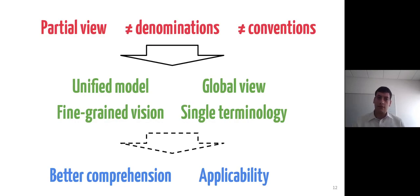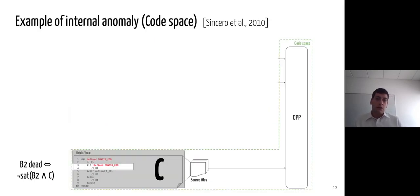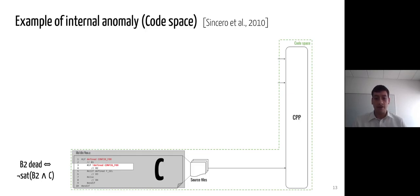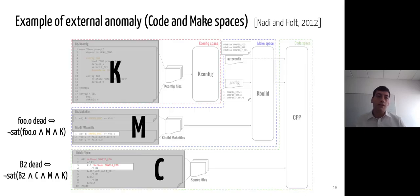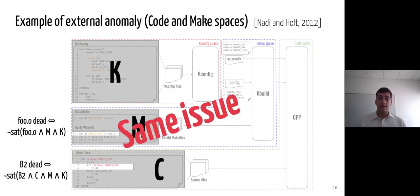I will now present the incoherences present in the state of the art. In 2010, Sincero et al. characterized the formula to check if a code block is dead by checking the non-satisfiability of the conjunction between the boolean formula for the selection of the block and the constraints for all other blocks in the code space, represented in the formula by C. However, in practice, taking into account the whole set of constraints does not scale due to the number of features and code blocks in the kernel. This formula cannot be reused as-is, so we need a finer-grained view of the context around the selected asset. This work has been extended, and definitions updated to consider also constraints from the kconfig and make spaces, but the problem remains: the integrity of all spaces is considered in the given formulas, making these formalisms not fine-grained enough to allow reusability.